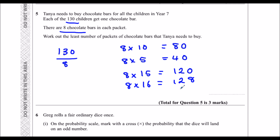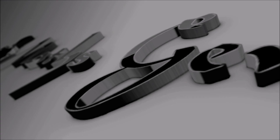I'm still two chocolate bars short, so I'm going to have to buy another packet, which will take me over 130. So she's going to have to buy 17 packets to have enough chocolate bars for all 130 children.